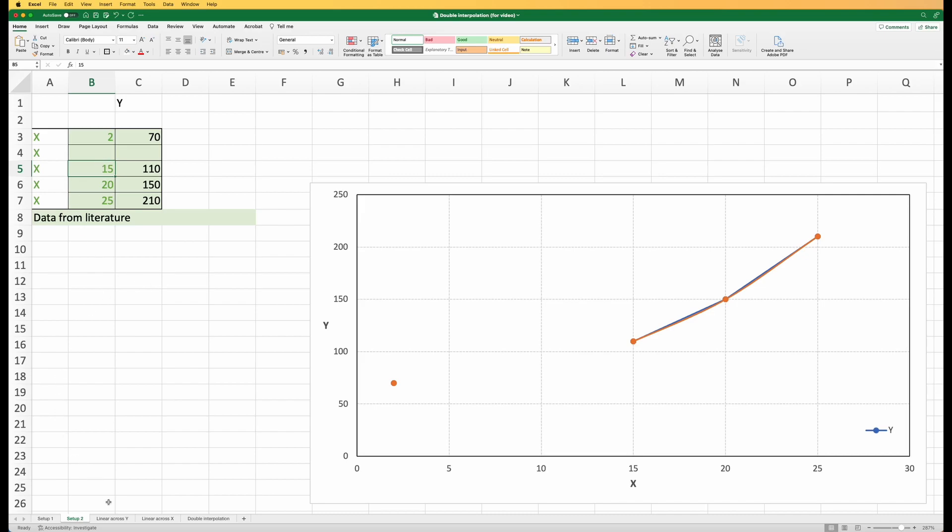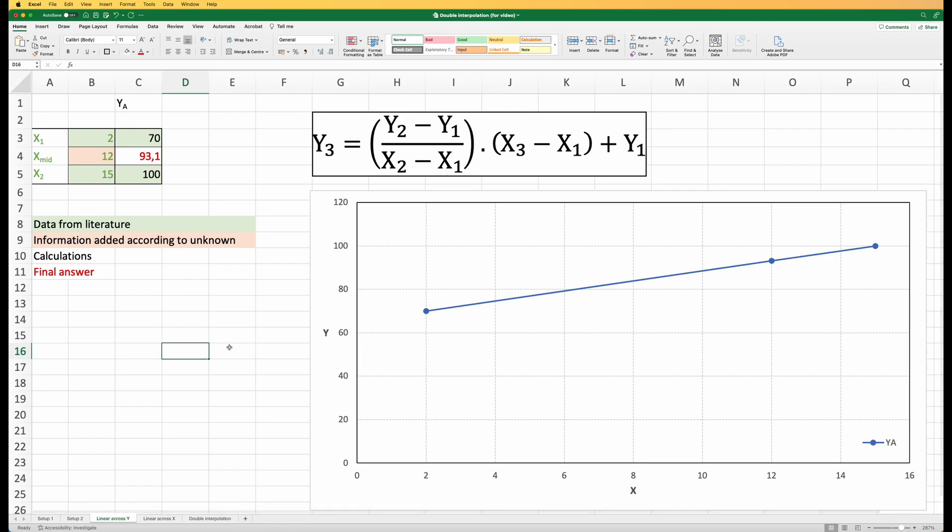The way I want to set this up is look at it across the Y side, so I'm only going to be looking at it through the Y direction for now. We have a value of 2, 15, 70, and 100 which are the points that we have collected from our data from literature - those are the green values. The green in text - that is the value that we have.